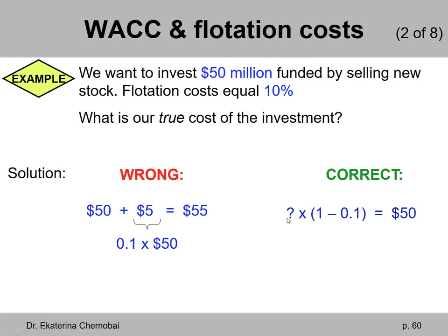What is enough? The correct calculation follows a backward approach. We sell some dollar amount of new shares of stock, 10% of that will be gone, so we multiply that dollar amount by 1 minus 0.1, and that should equal exactly 50 million dollars that we need for our project. Rearranging to solve for the unknown: the amount to raise equals 50 million divided by (1 minus the flotation cost of 0.1), which gives 55.6 million. So 55.6 million is just right — when we subtract 10% of that, we are left with exactly 50 million.